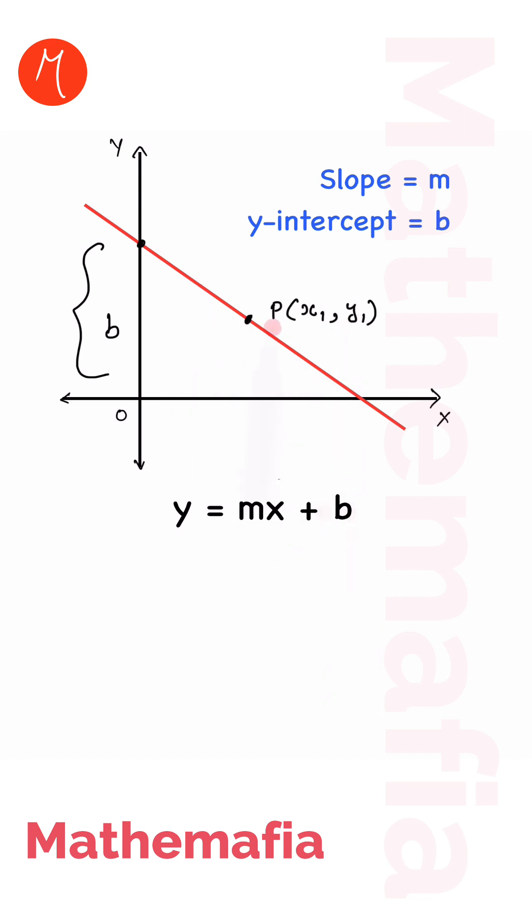This would mean that x1, y1 should satisfy this equation, so we can write y1 equals mx1 plus b. Let's call it equation number one, and let's call the original equation number two.